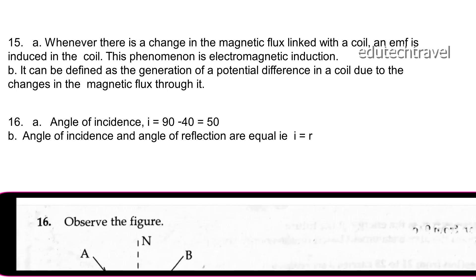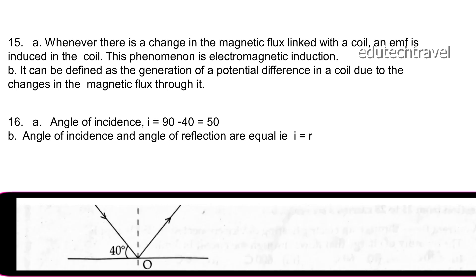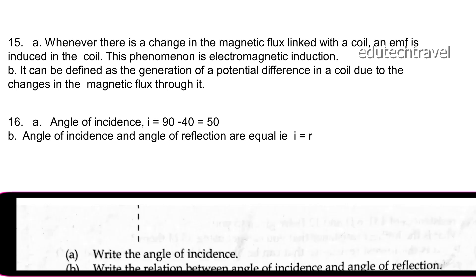Next question on angle of incidence: the angle of incidence is 90 minus 40 equals 50 degrees. The relation between angle of incidence and angle of reflection: angle of incidence and angle of reflection are equal.